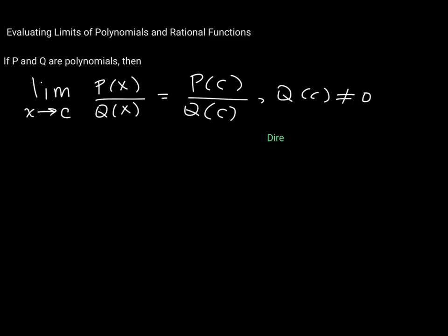When the denominator is zero, you'll have to manipulate your function so you're not dividing by zero — because dividing by zero gives an undefined result. We'll look at an example of that in just a second.